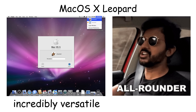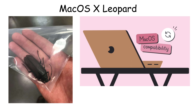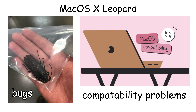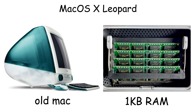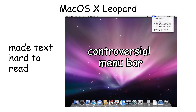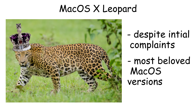These features made Leopard incredibly versatile. However, Leopard had issues at launch. Many users reported bugs and compatibility problems with older software. Some complained that Leopard was slower than Tiger, especially on older Macs with limited RAM. The translucent menu bar was also controversial, because it made text hard to read. But despite initial complaints, Leopard became one of the most beloved Mac OS X versions.